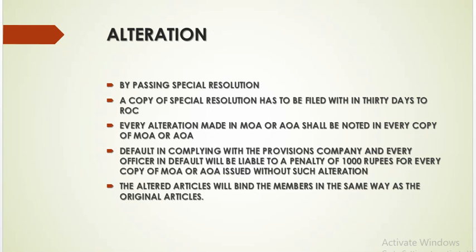If there is a default in compliance with the provision, then the company and every officer in default will be liable to a penalty of rupees 1000 for every copy of the memorandum of association or article of association which is issued without such alteration. The altered article will bind the members in the same way as the original article.